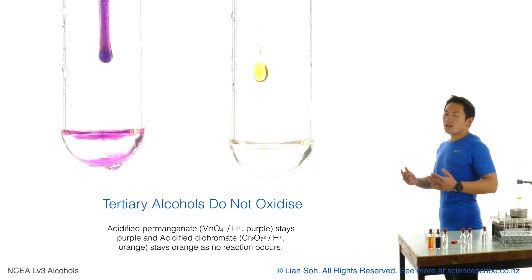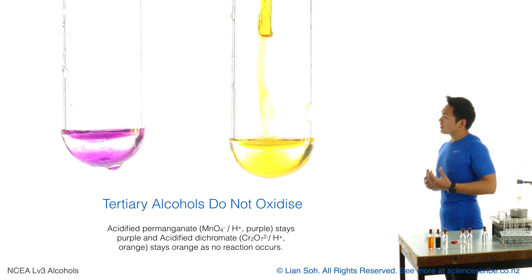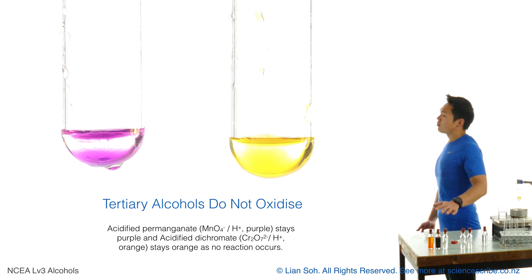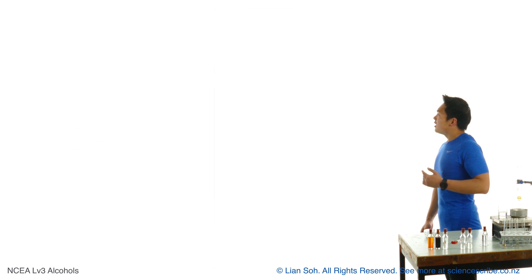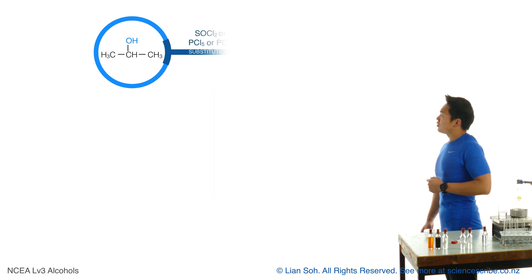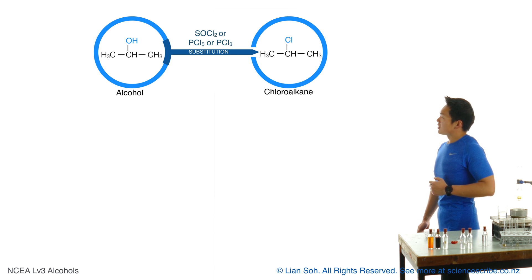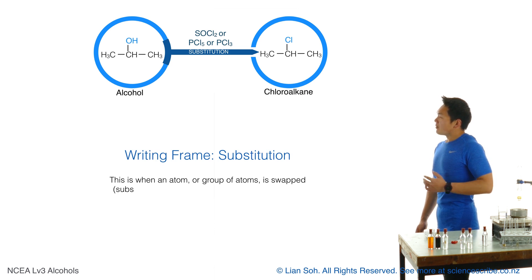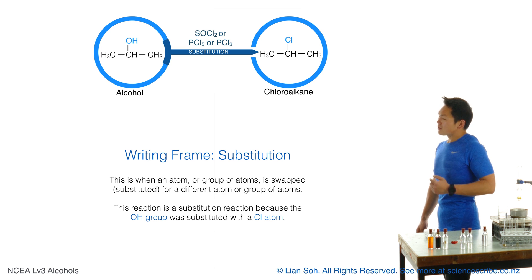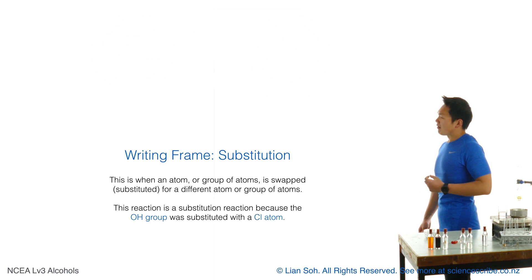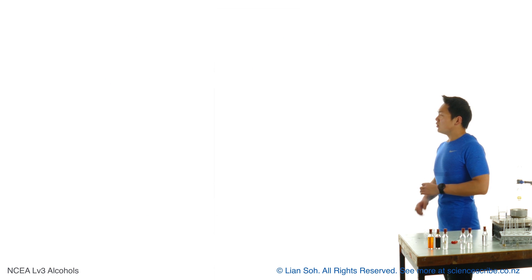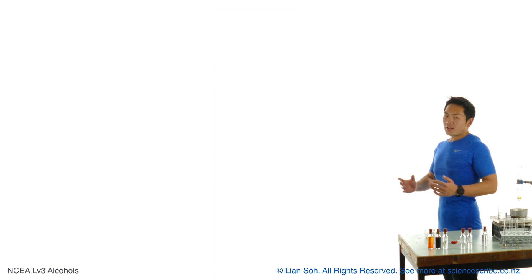Tertiary alcohols don't change compared to last year — they don't oxidize at all, so nothing should happen when you add dichromate or permanganate. Also the same as last year, alcohols undergo substitution reactions with reagents such as thionyl chloride (SOCl2), swapping out the OH group for a Cl atom to make a haloalkane — a chloroalkane in this case.